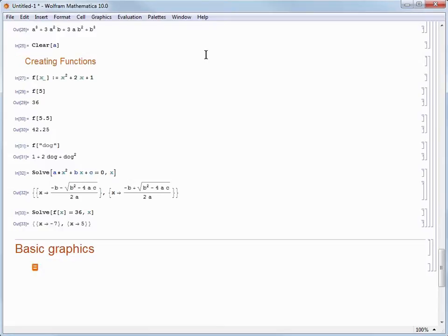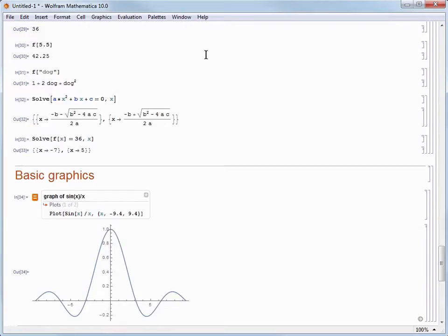So now that we've started a new Freeform Input cell, let's type graph of sine of x over x, and then press Shift-Enter. As before, we get back the Wolfram Language command that we would invoke directly, along with the result.